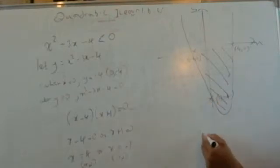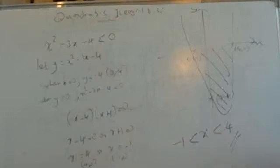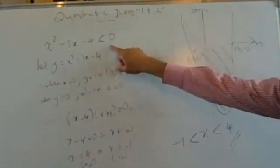All the x values in between that point and that point give a negative graph value. So the answer — the solution — would be: x has to be greater than minus 1 but less than 4. And that's the answer to the quadratic inequality. Remember, if x is greater than 4, the graph is up here and that's positive. If x is less than minus 1, the graph is up there — positive again. What we want is the negative section, so it's this bit here.